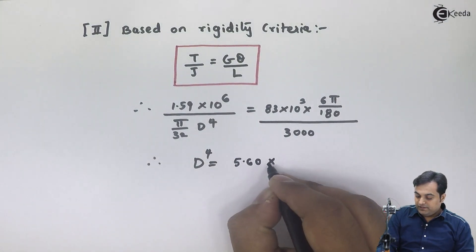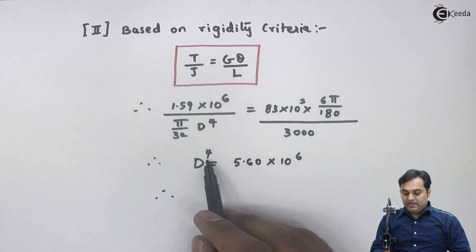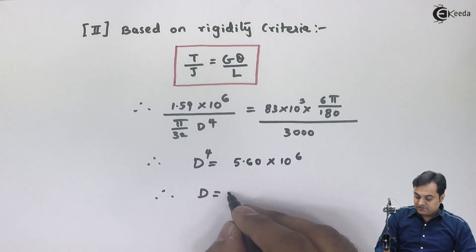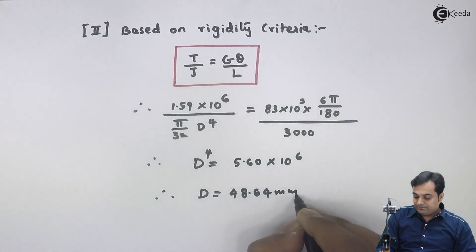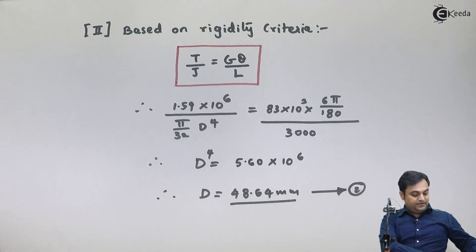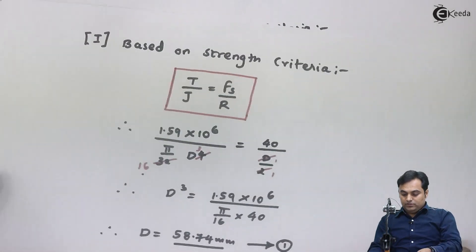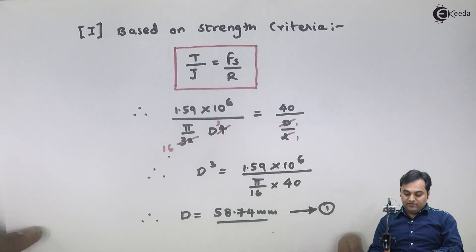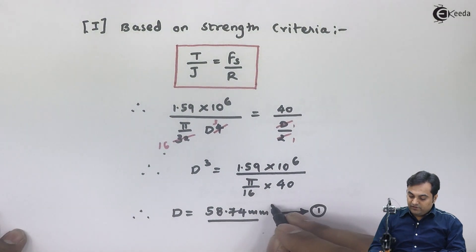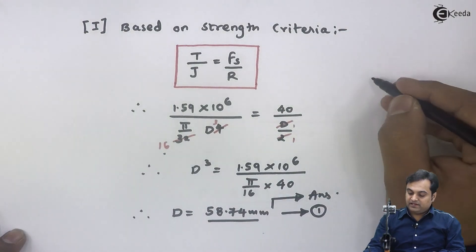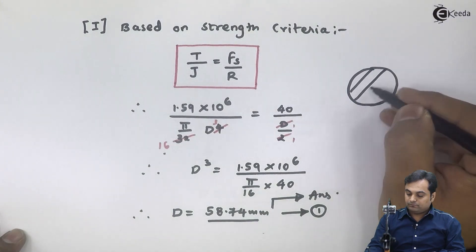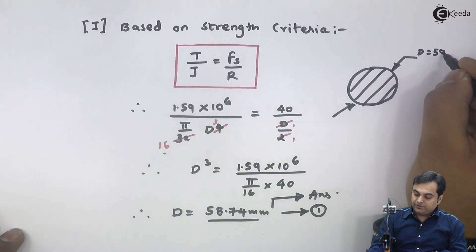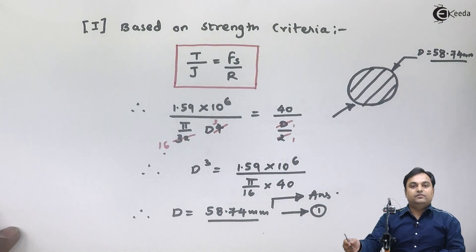Taking the square root twice of 5.60 × 10⁶ gives the diameter of the solid shaft as 48.64 mm — this is equation number two. Comparing equation one (58.74 mm) and equation two (48.64 mm), we select the greater diameter. Hence, the diameter of the solid shaft is 58.74 mm. This completes the question.